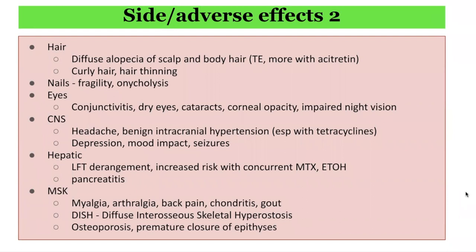Eye effects include conjunctivitis, dry eyes, cataracts, corneal opacity, and impaired night vision. Central nervous system effects include headache, benign intracranial hypertension — particularly when taking isotretinoin with tetracyclines such as doxycycline and tetracycline — so it's important to ensure patients are not taking these concurrently. It can be associated with depression, mood changes, and seizures. Hepatic effects include liver function test derangement and increased risk with concurrent methotrexate and ethanol. It is also associated with pancreatitis, particularly with concurrent alcohol intake and binge drinking. Musculoskeletal effects include myalgia, arthralgia, back pain, chondritis, and gout. For long-term oral retinoid use, DISH — diffuse idiopathic skeletal hyperostosis — is a particular side effect, involving ossification of ligaments and entheses, requiring monitoring with imaging. Other effects include osteoporosis and premature closure of epiphyses.